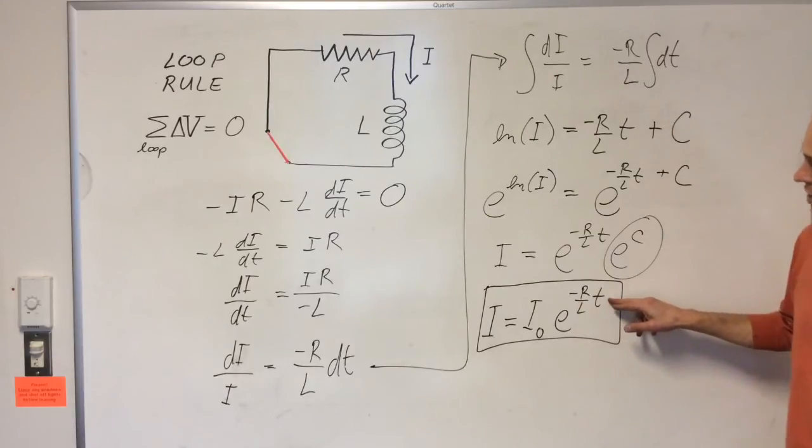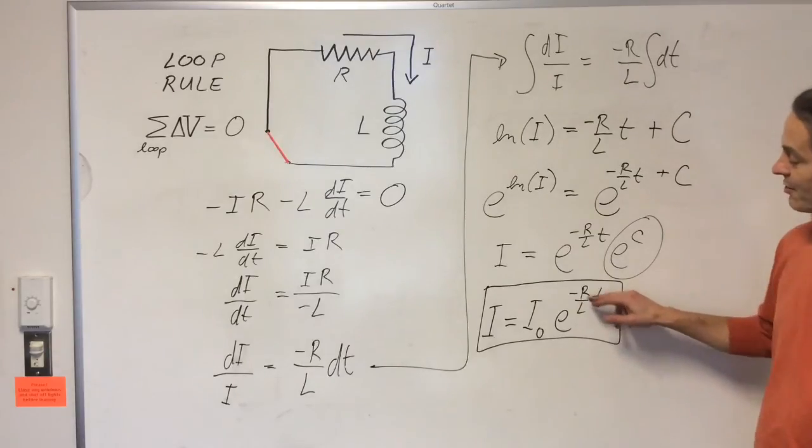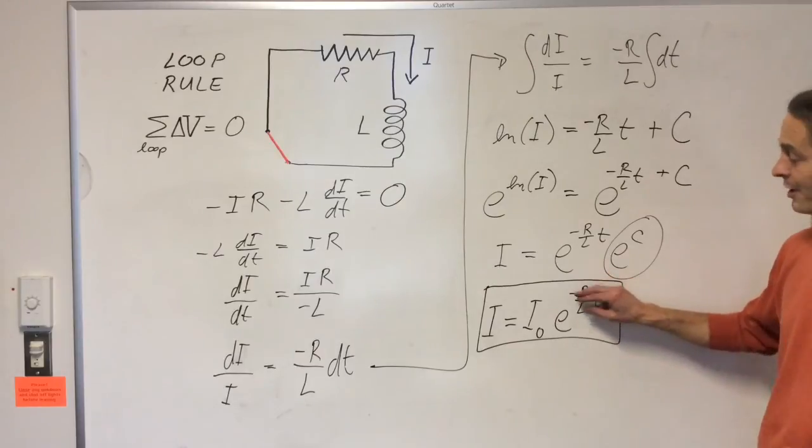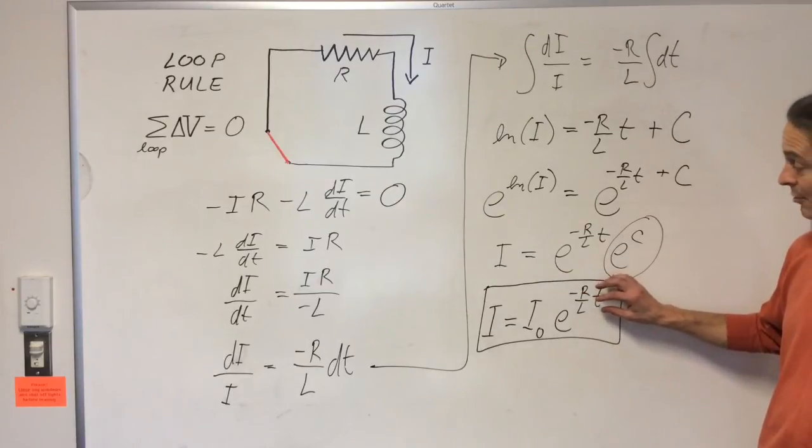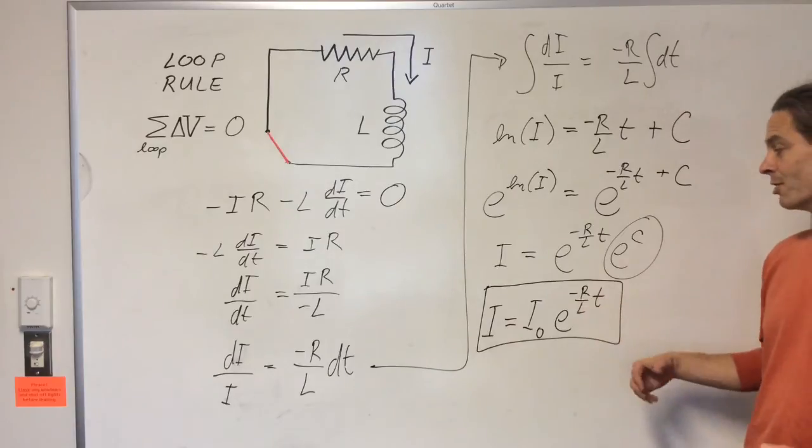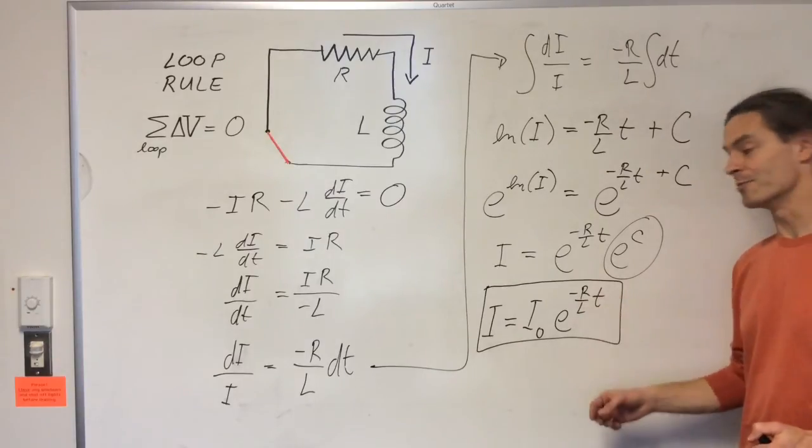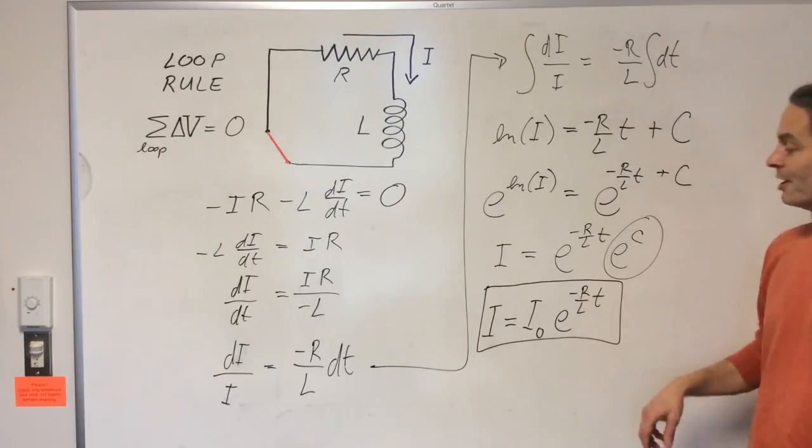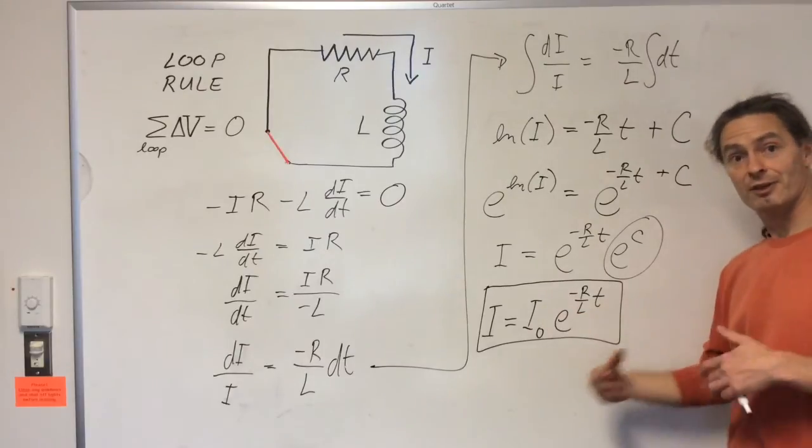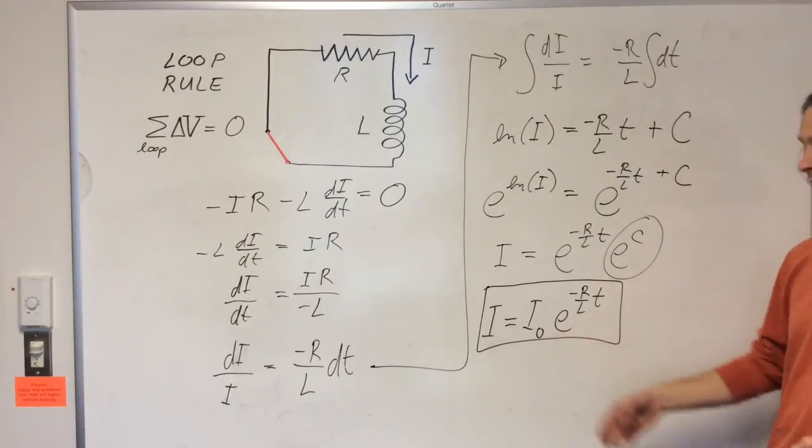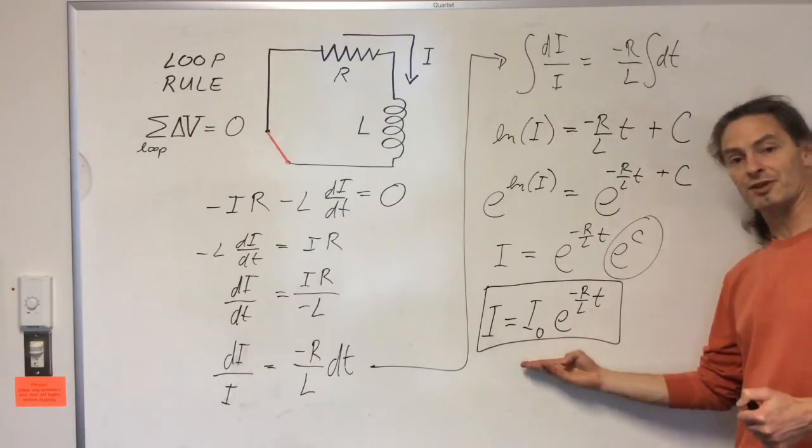And then at really large times, we'll have e to the minus a really big number. E to the minus a really big number gives you something really close to zero. And so what that means is at really long times, the current decays to zero. In between the initial value and zero, the current decays as a function of time according to this expression.